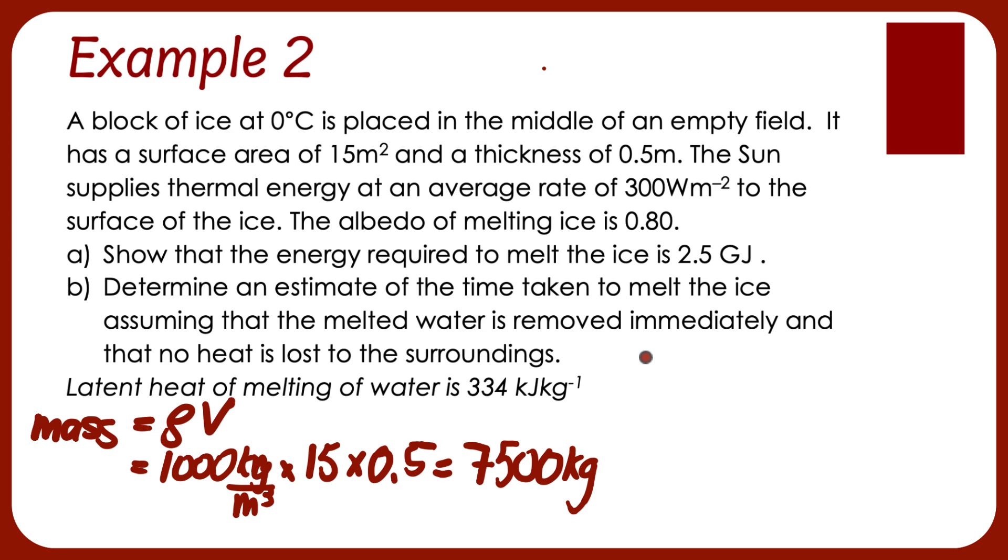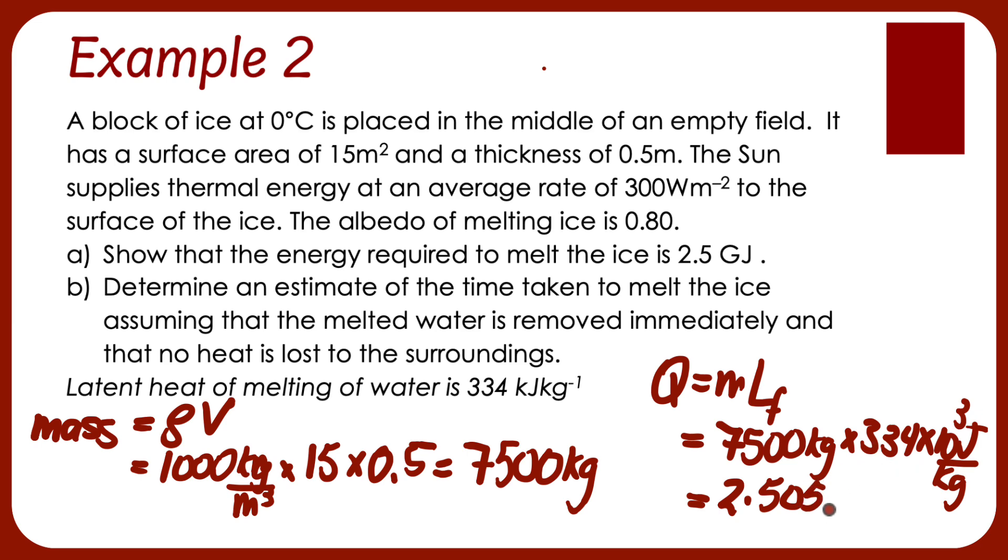Now, we know the equation for melting ice. That's going to be Q equals ML, L being the latent heat of fusion, which they've given us here. Don't forget, double-check these units. This says kilojoules per kilogram. So if I have 7,500 kilograms, and I multiply that by 334 times 10 to the power 3 joules per kilogram, my calculator tells me this is 2.505 times 10 to the power 9 joules. And times 10 to the power 9 is a gigajoule. So that's approximately 2.5 gigajoules.